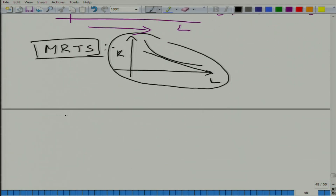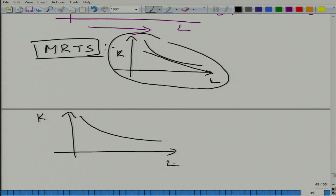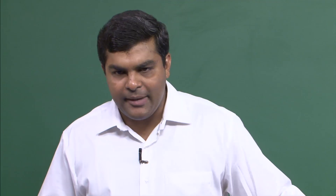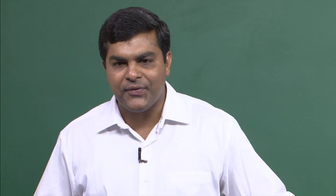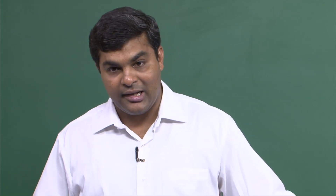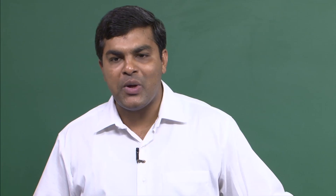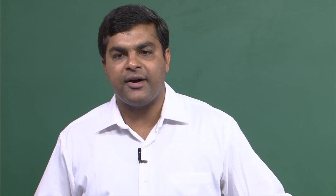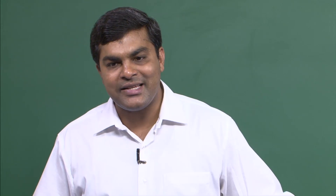If we keep on increasing labor — on this graph, this is one isoquant producing Q₀ — increasing L means moving along this curve. Whenever we increase labor, we have to decrease capital to obtain the same output. If we keep increasing labor without decreasing capital, output will increase if marginal productivity of labor is positive, and decrease if it is negative.